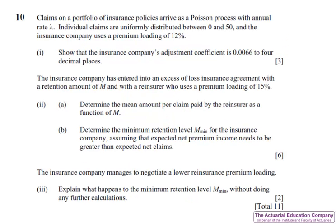Question 10 tests adjustment coefficients from chapter 9 of the notes. In this question, claims are uniformly distributed, which is a little bit messy. It's fairly standard stuff to obtain the premium and the MGF, however solving the equation will be quite messy, which is why we're simply asked to show that its value is 0.0066.